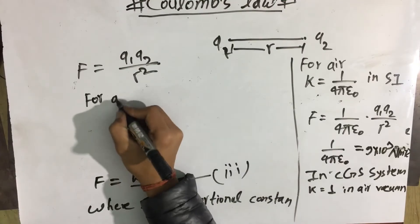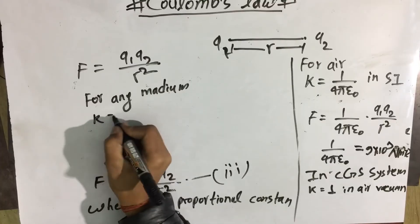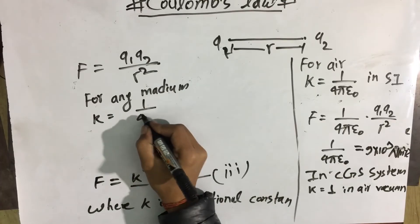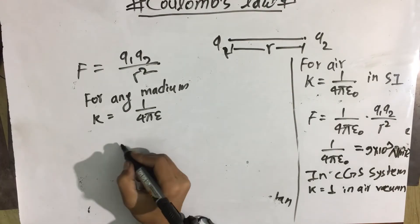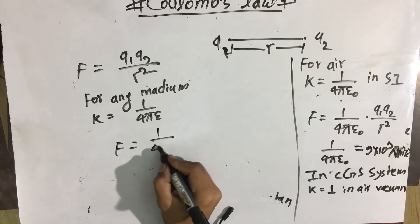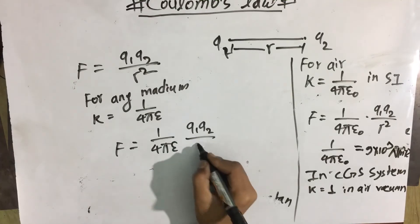For any medium, K value is 1 by 4 pi epsilon, so force is equal to 1 by 4 pi epsilon q1 q2 by r square.